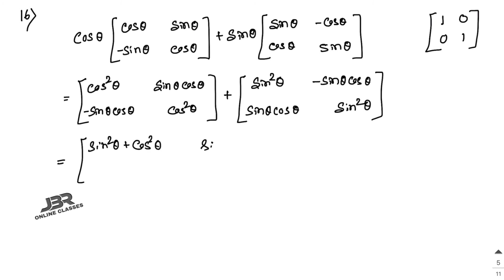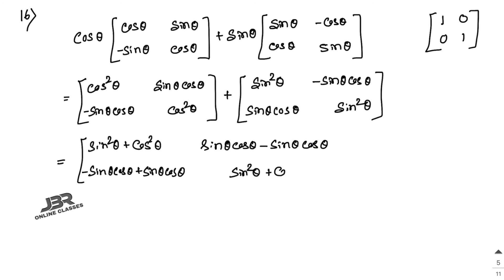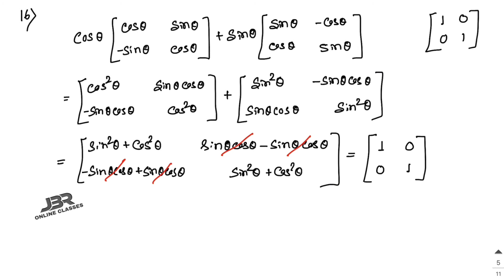Now add the two matrices. First element: sin²θ + cos²θ. Off-diagonal: sin θ cos θ - sin θ cos θ = 0 (they cancel out). Last element: sin²θ + cos²θ. In trigonometry, sin²θ + cos²θ = 1, so the result is [1, 0; 0, 1]. Hence proved.